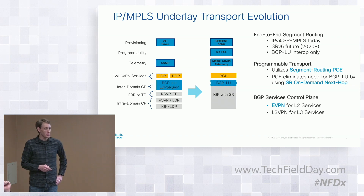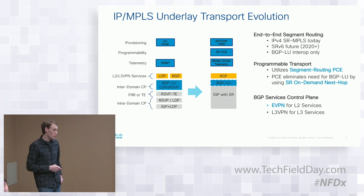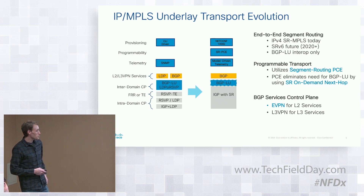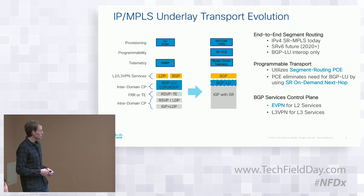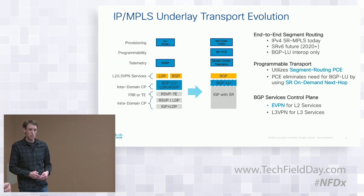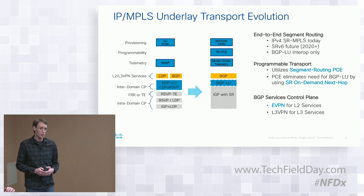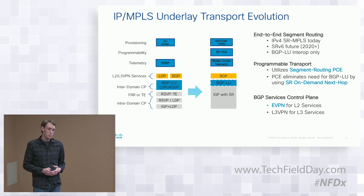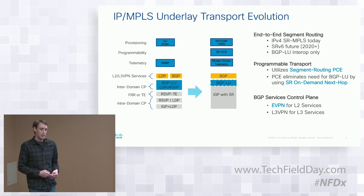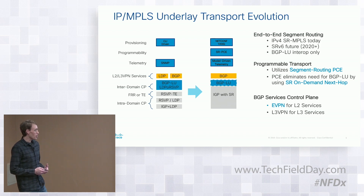You guys have seen this slide before — Jiri showed this slide in his presentation. It's really the simplification journey over time of how we evolved from all these different control plane protocols in the past, supporting inter-domain control planes using unified MPLS or seamless MPLS and BGP labeled unicast. If we wanted to support fast reroute on top of that, RSVP-TE was always the answer. Today we can do all of those different things simply with IGP-based segment routing, which takes care of all those different functions by itself.